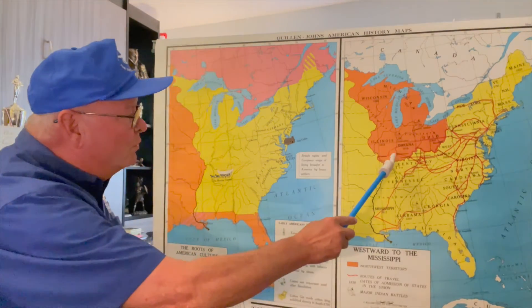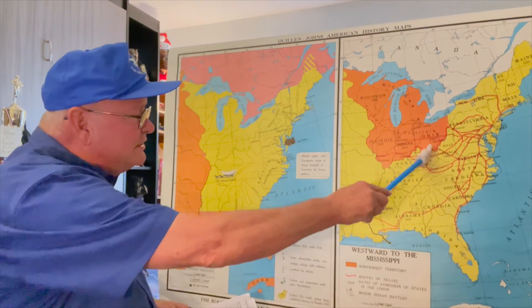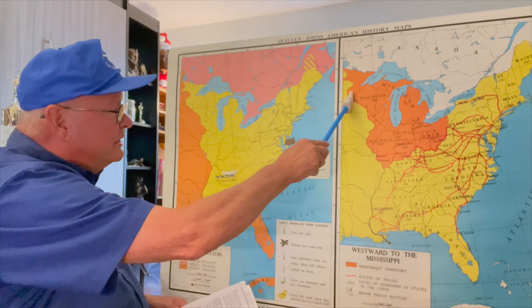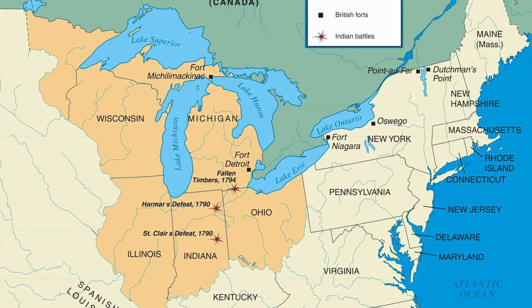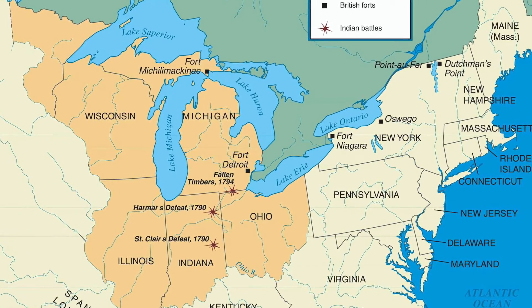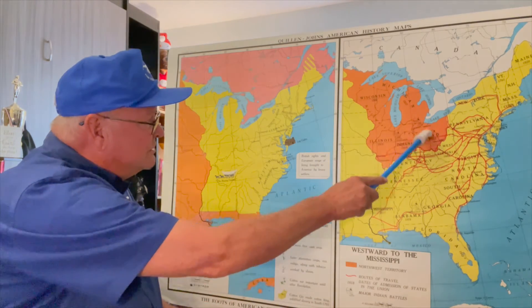As weak as the Articles of Confederation was, they did pass two important ordinances that you'll read about this week, having to do with what came to be known as the Northwest Territory, right here. And these are the states that came out of the Northwest Territory. It provided for an orderly transition of these territories to enter the Union, and it also outlawed slavery in any of this territory.